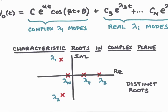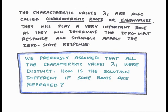We can plot these characteristic roots lambda 1 through lambda n in the complex plane. Note that all the roots are distinct, and that lambda 1 and lambda 2 appear as a complex conjugate pair. These characteristic roots are clearly very important to the solution of the zero input problem, but they're also very important in the case where there is an input. The characteristic roots are also known as eigenvalues, and you might see that term in other classes.